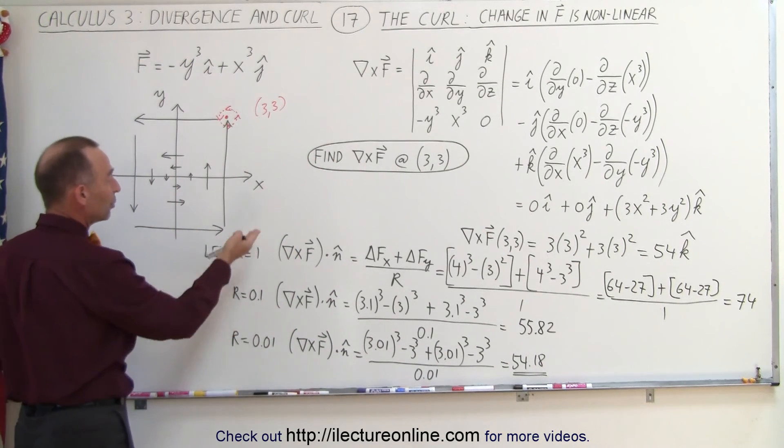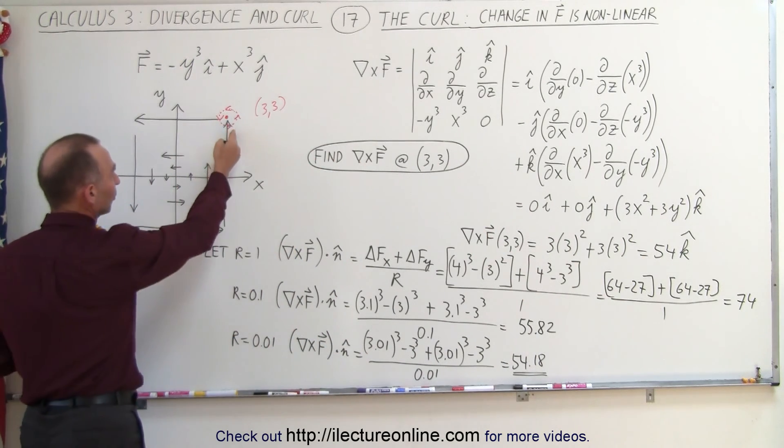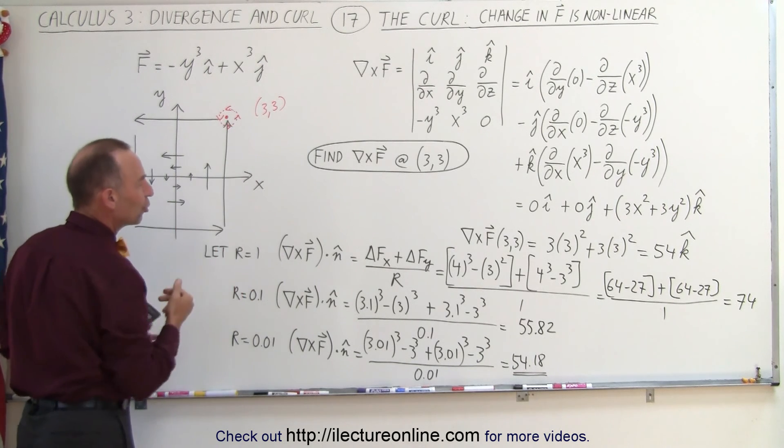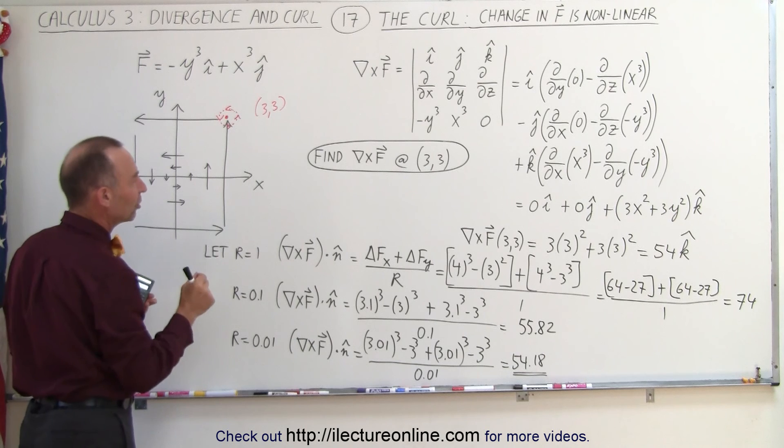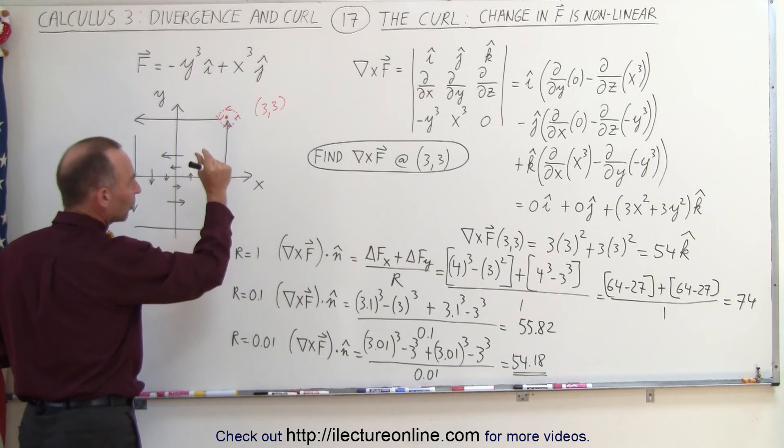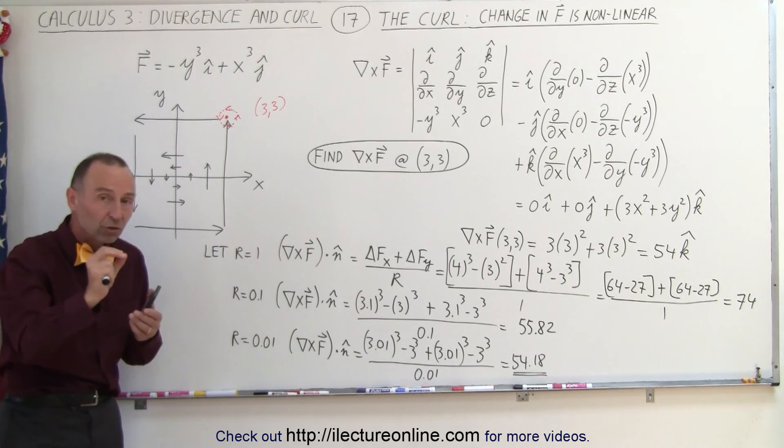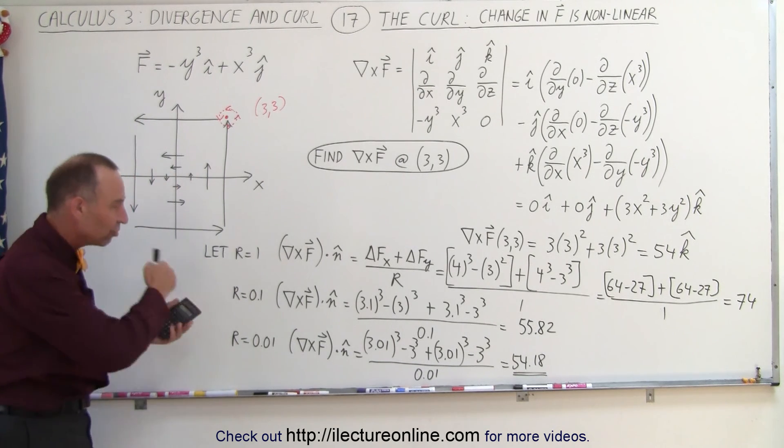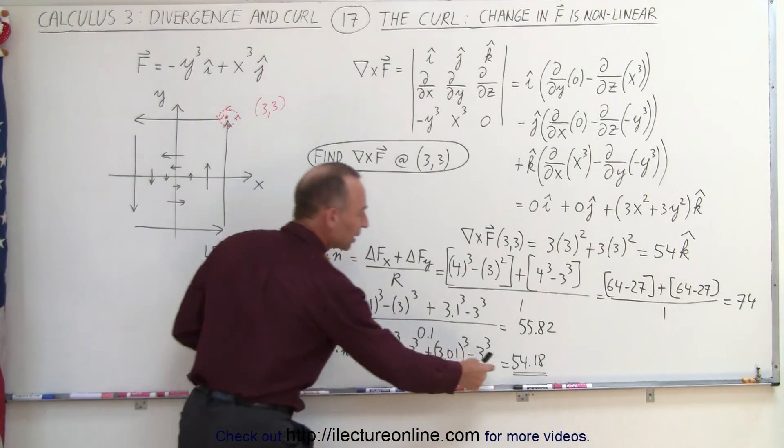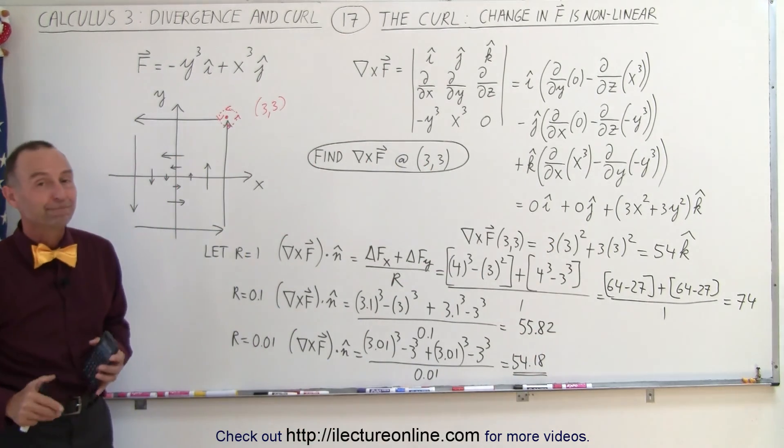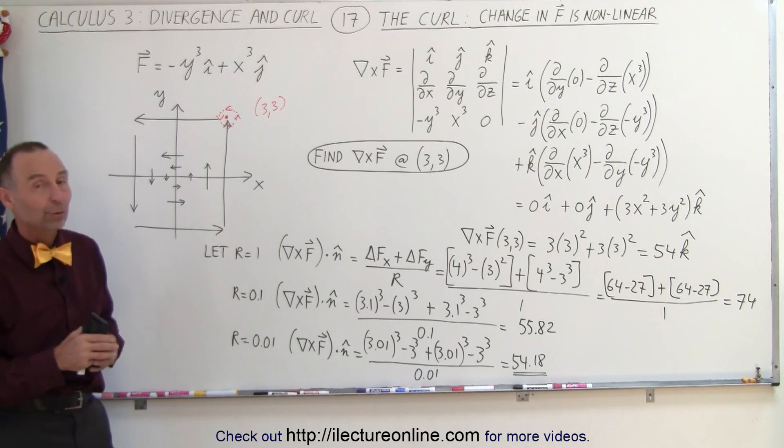Or you can simply use the idea that if you move a certain distance in the x direction, move a certain distance in the y direction, see how much the magnitude of your vector field changes, and as you make that smaller and smaller and smaller, to the point where the change in x and change in y becomes minuscule in the limit as the change goes to 0, the value you get here will be exactly the same as the value you get there. And that's what we mean by the curl.